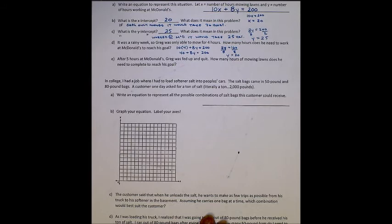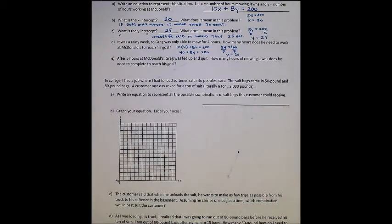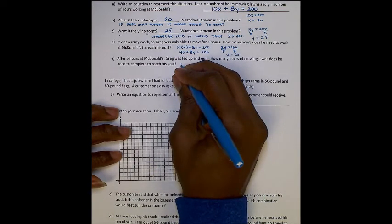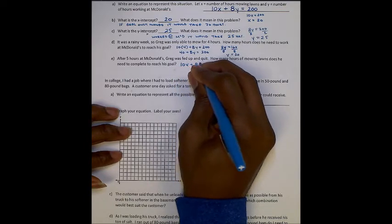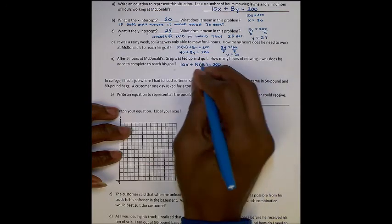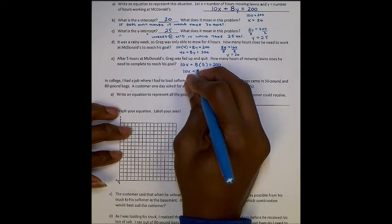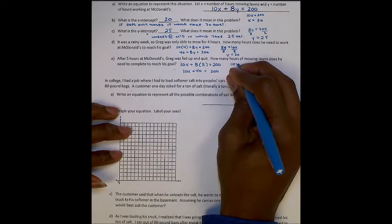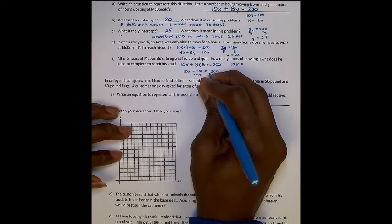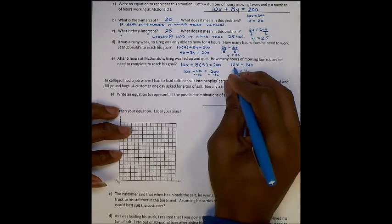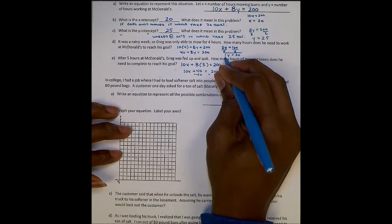And so now, let's look at a different situation. Let's say he's working at McDonald's for 5 hours and he's fed up and quit. How many hours of mowing lawns does he need to reach his goal of $200? Again, we use the same formula here. But now, 10x plus 8, y is no longer a variable because we know that y is 5. Worked there 5 hours and that's as much as it could take. Well, that means 10x plus 40 equals 200. And so, let's go up here. 10x equals, subtract 40 from both sides, equals 160. And so x would be 16. He would need to work 16 hours mowing lawns in order to make his $200 goal.